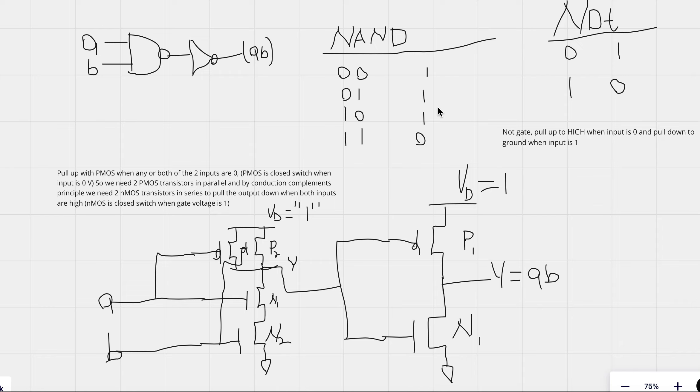With CMOS and our pull up and pull down networks, whatever we do with the PMOS, we need to be equal and opposite with NMOS. So if we have two PMOS transistors in parallel for the pull up part, by the law of conduction complements, we need two NMOS transistors in series to pull down the output voltage to 0 or ground when both of these inputs are high. So as you can see from the last entry right here in the NAND truth table, we pull the output voltage to 0 when both of them are high.